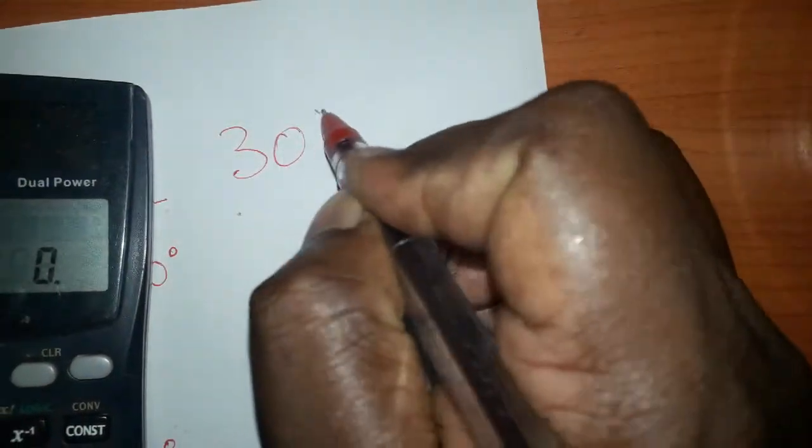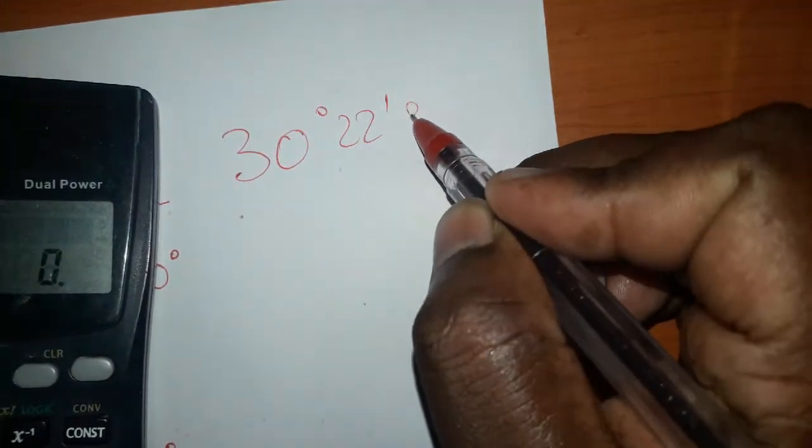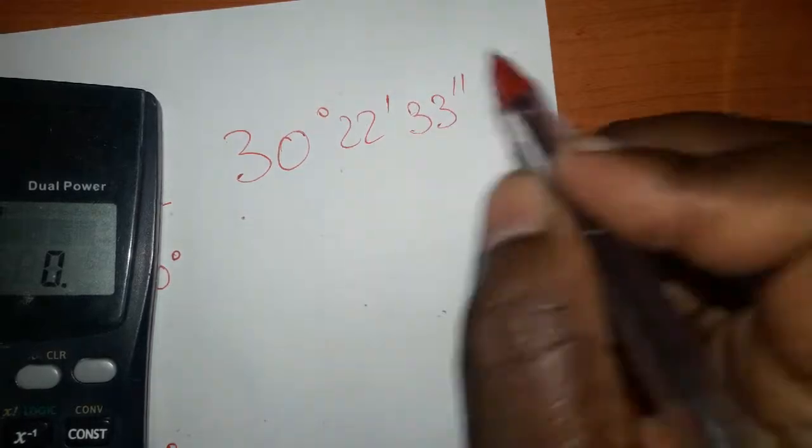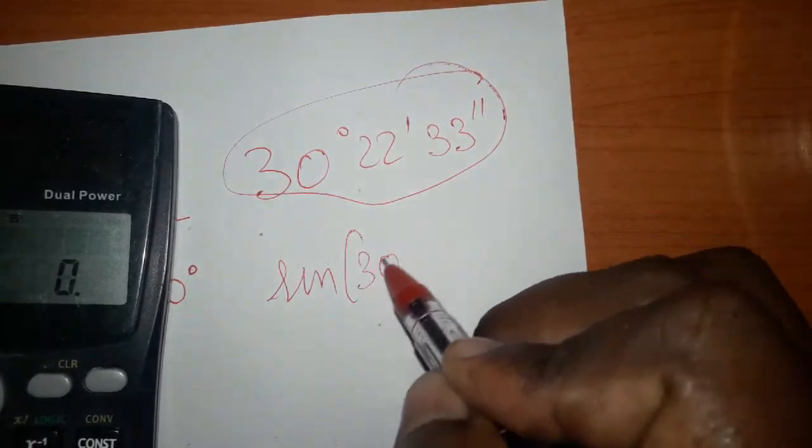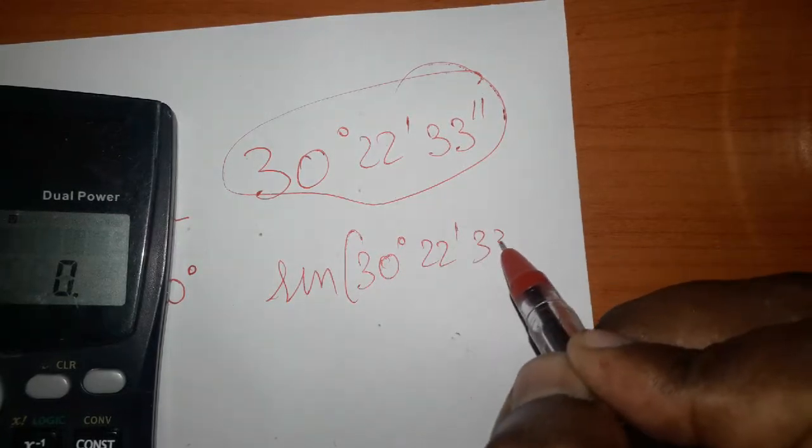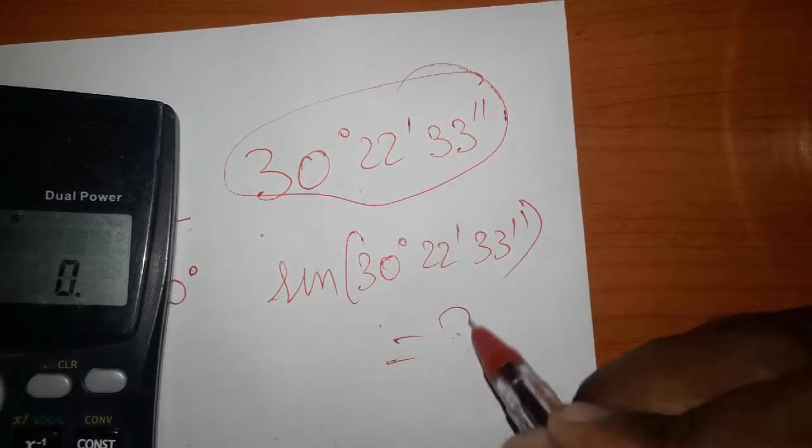degrees, 22 minutes, and 33 seconds. This is what we are going to do: sin of 30 degrees, 22 minutes, and 33 seconds. What is the answer for this? That's what we are going to